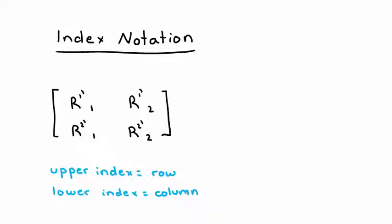The upper index is primed because it represents a transformation from one coordinate system, or what we call the unprimed coordinate system, to another primed coordinate system.